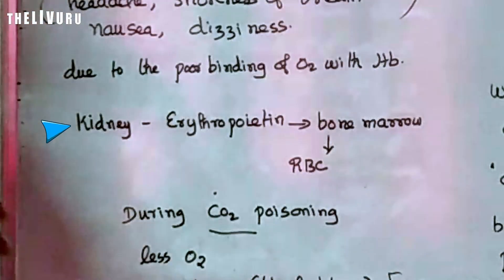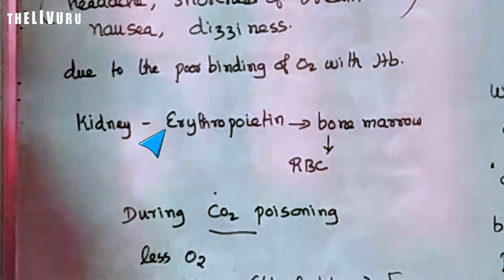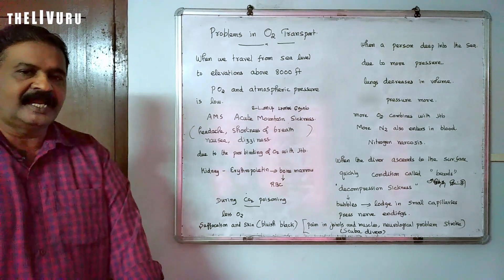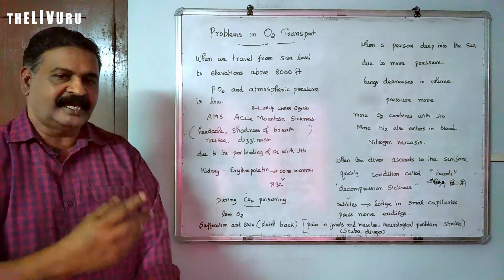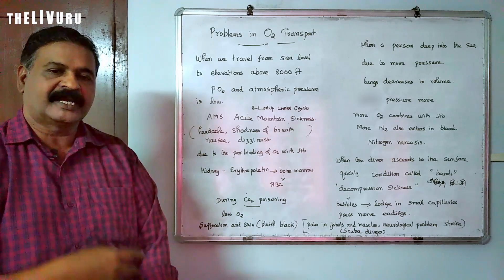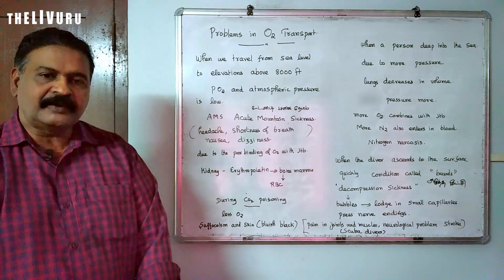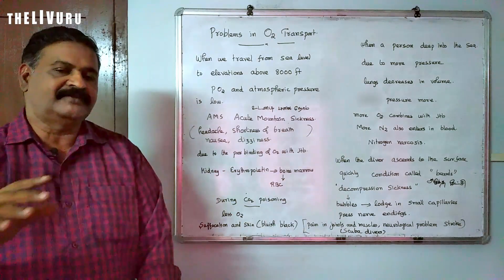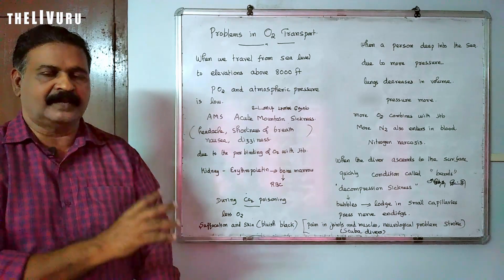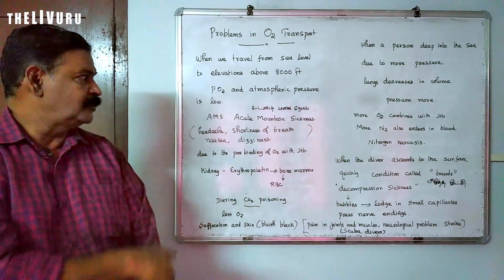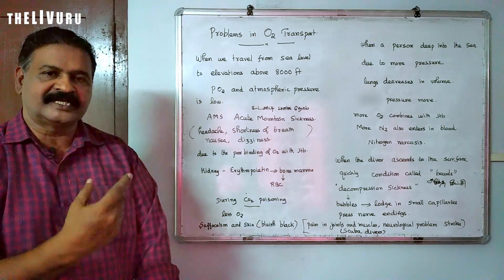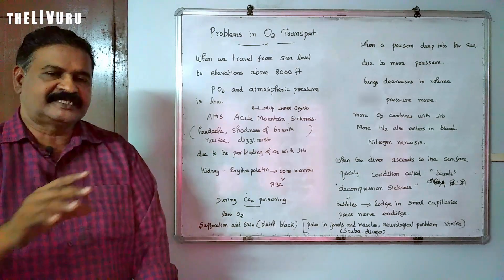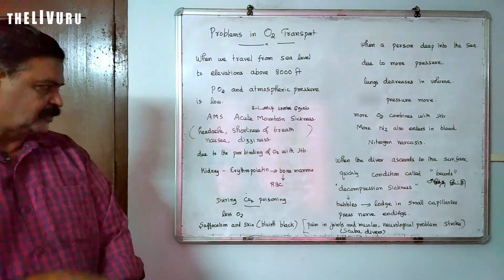How does the body get rid of this? What does the kidney do? The kidney releases a hormone called erythropoietin. This erythropoietin induces the bone marrow to produce more RBCs. So the hemoglobin count in the blood increases. This is how the body adapts — the bone marrow promotes hemoglobin and RBC production.